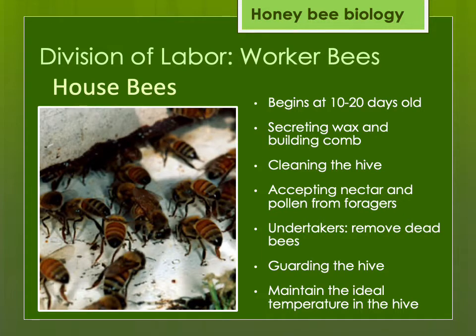Tasks of the house bees include secreting wax and building comb for brood or honey, cleaning the hive, waiting for foragers to return, and accepting nectar from foragers. Foragers tend to put pollen directly into the comb, and house bees then work with it to make bee bread. There's also a very specific job: undertaker bees, whose only task is to remove bees that die outside the hive. Later they move toward the entrance and begin guarding the hive from any threat. They also keep the temperature within the hive at the ideal level — the brood nest will be warm, usually around 92 degrees Fahrenheit, even in wintertime, by clustering together and generating heat.